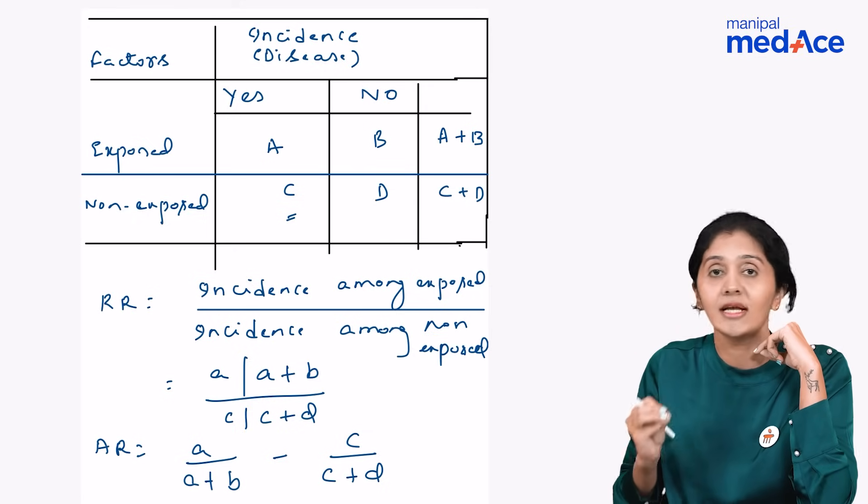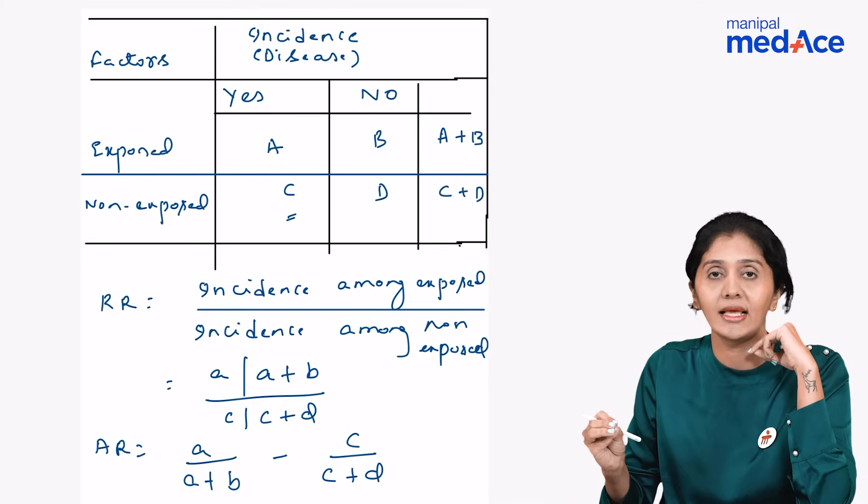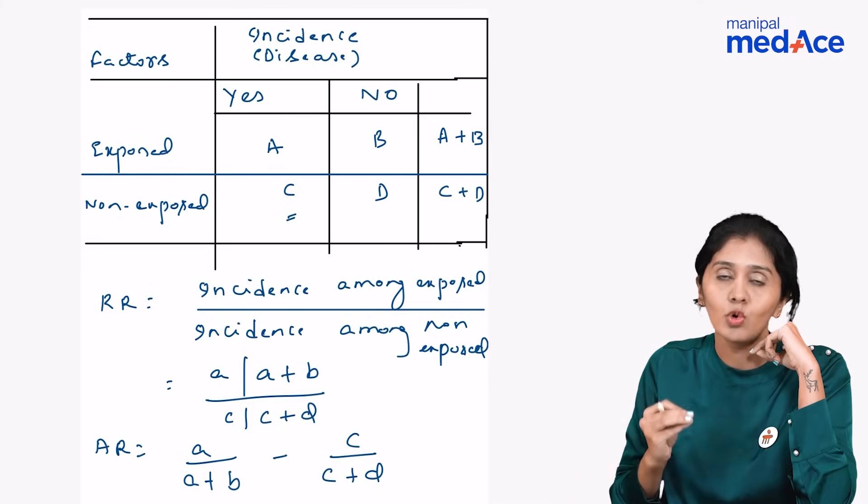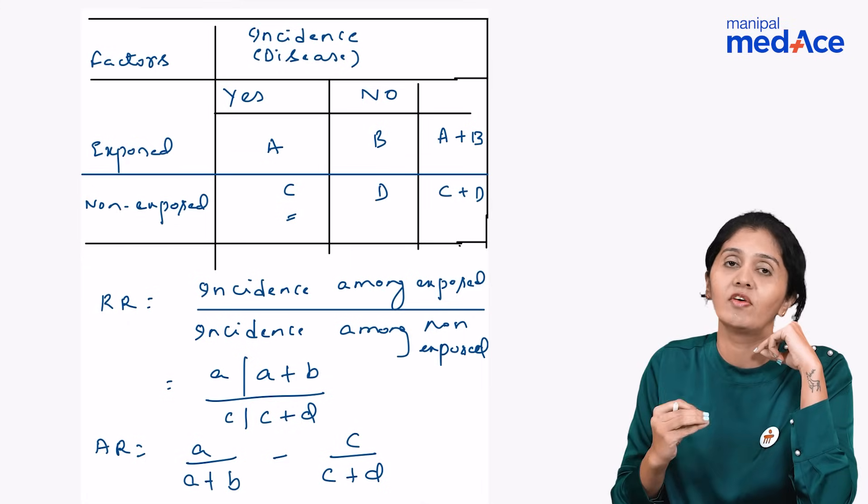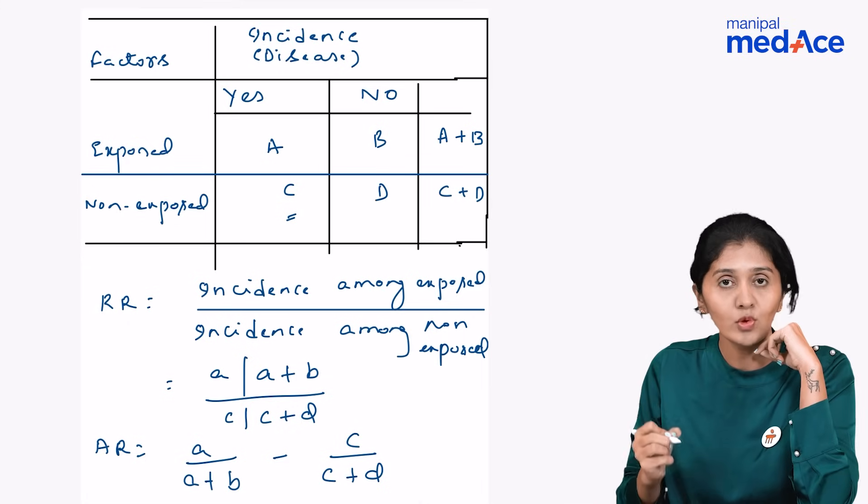So how do we interpret relative risk and attributable risk? If the relative risk is 5 between smoking and lung cancer, we can say that smokers are at 5 times higher risk of developing lung cancer compared to non-smokers. And attributable risk if it is around 80%, we can say that 80% of the lung cancer is due to smoking.